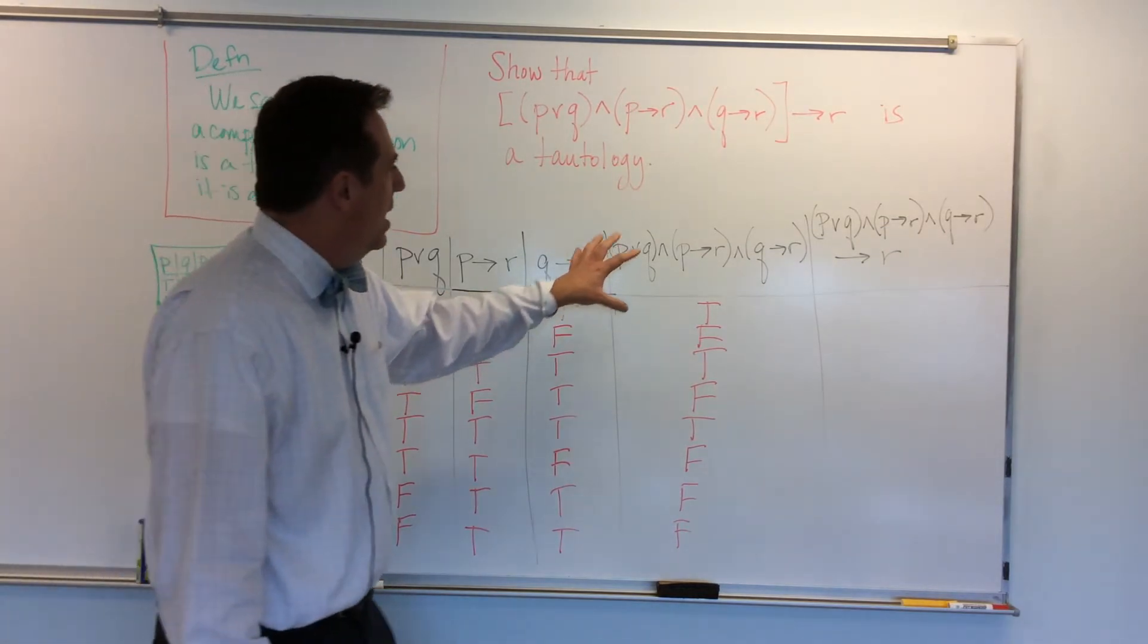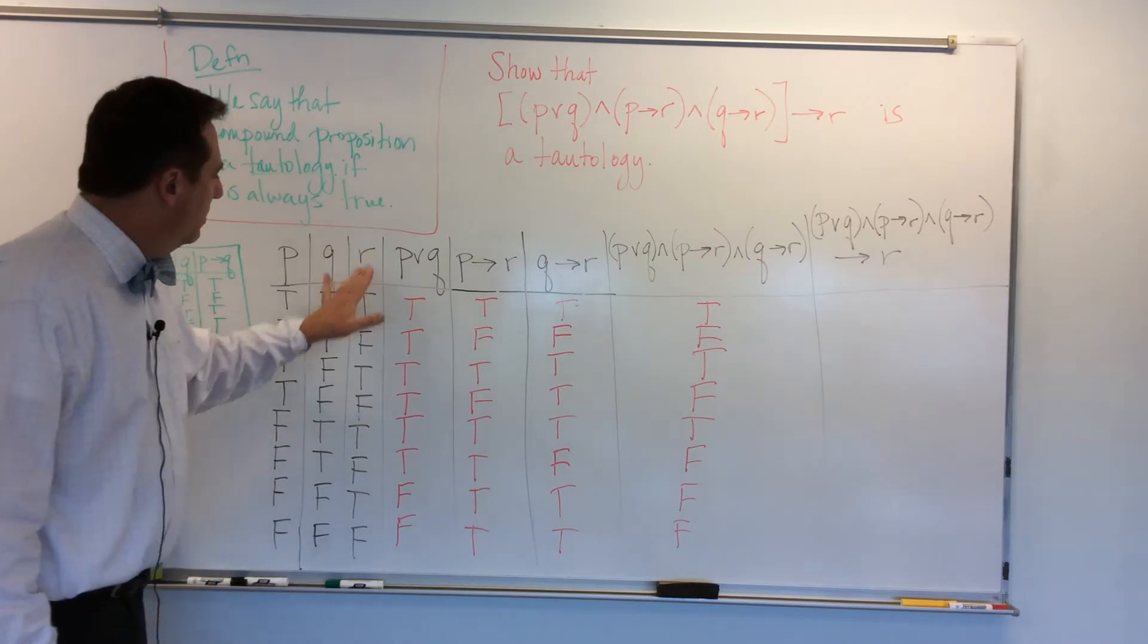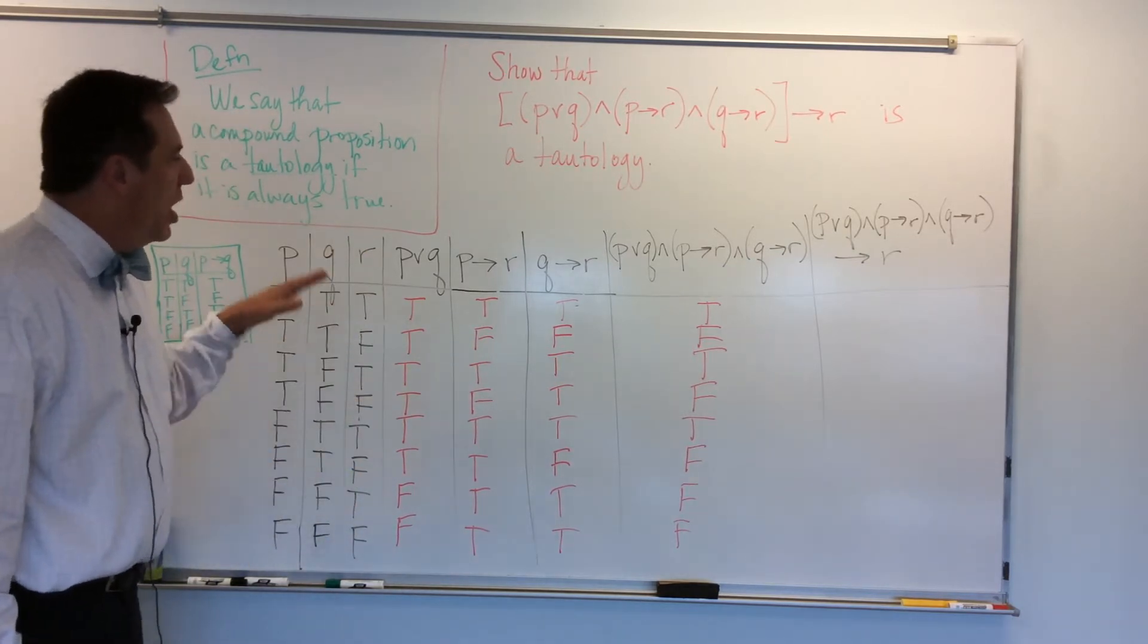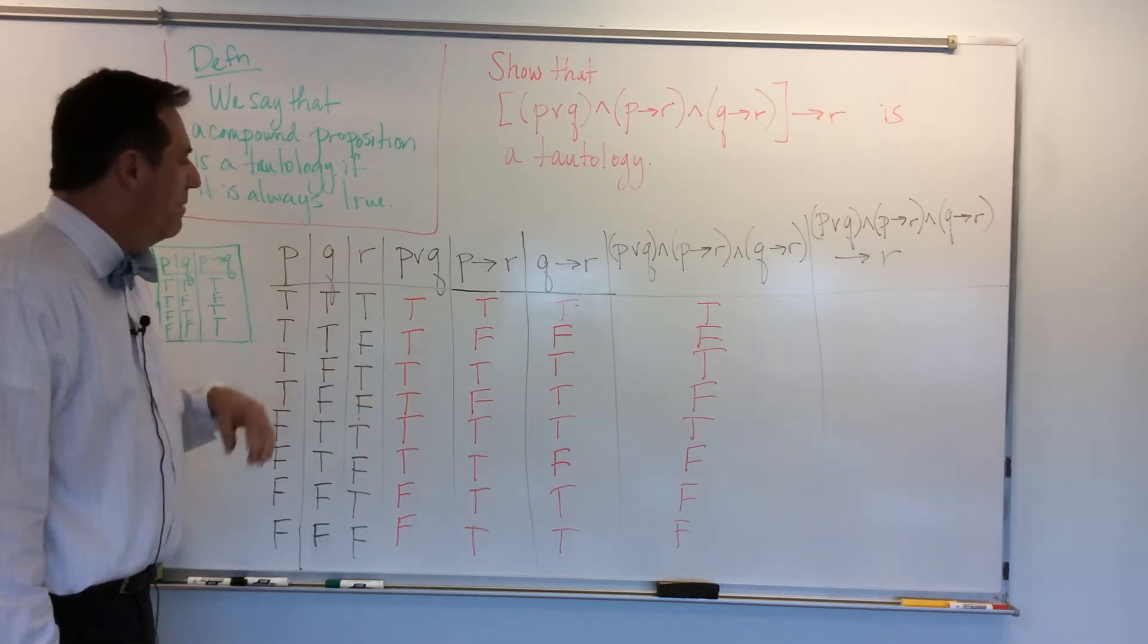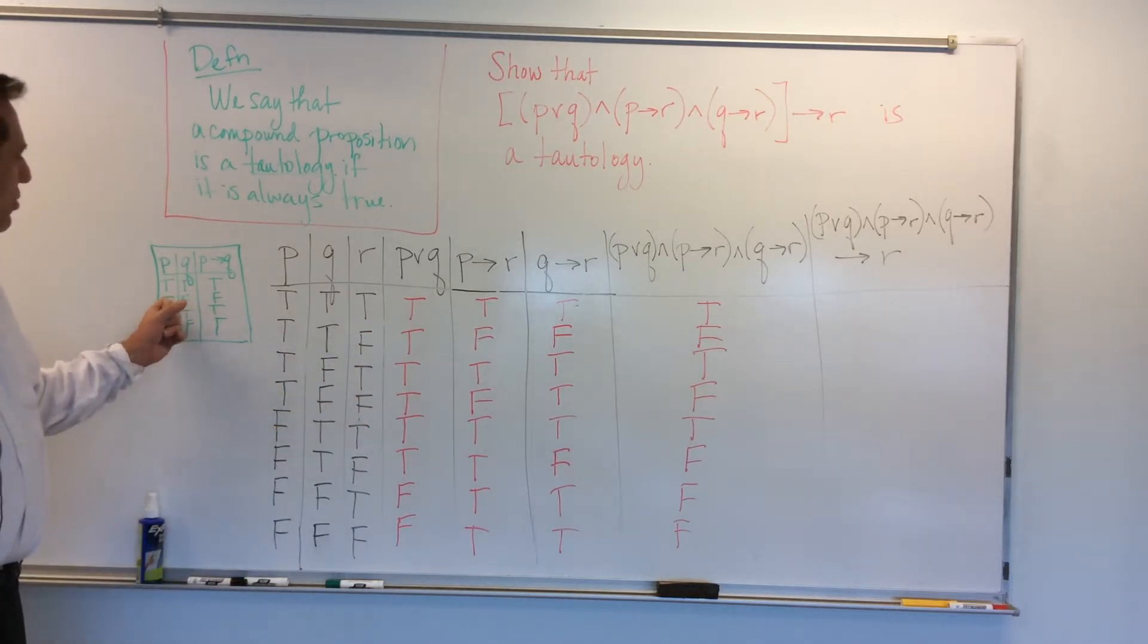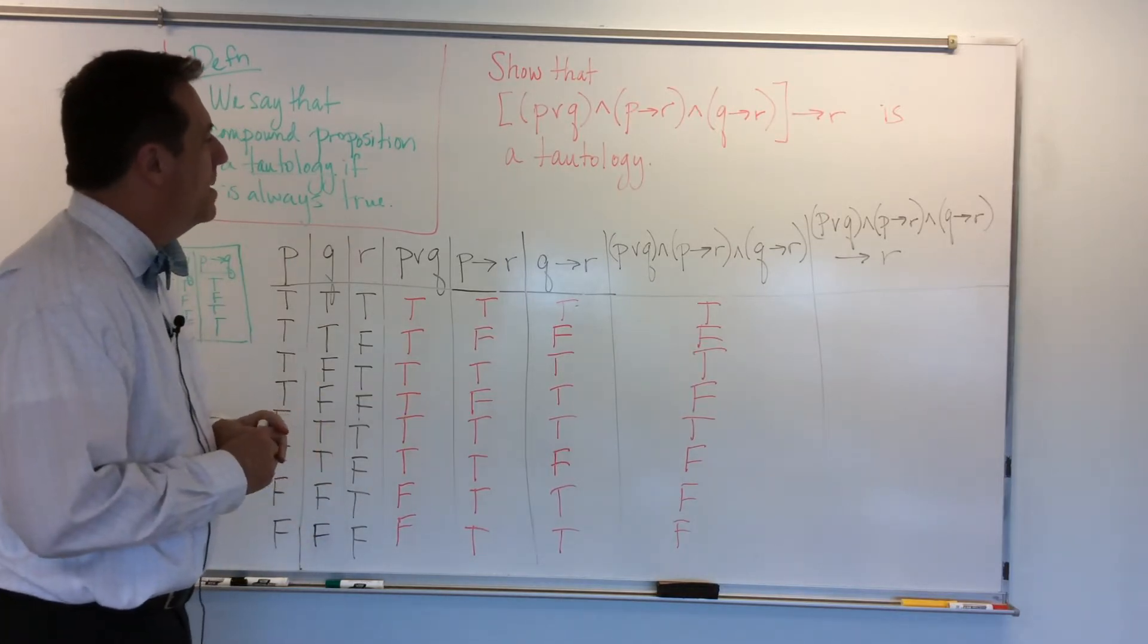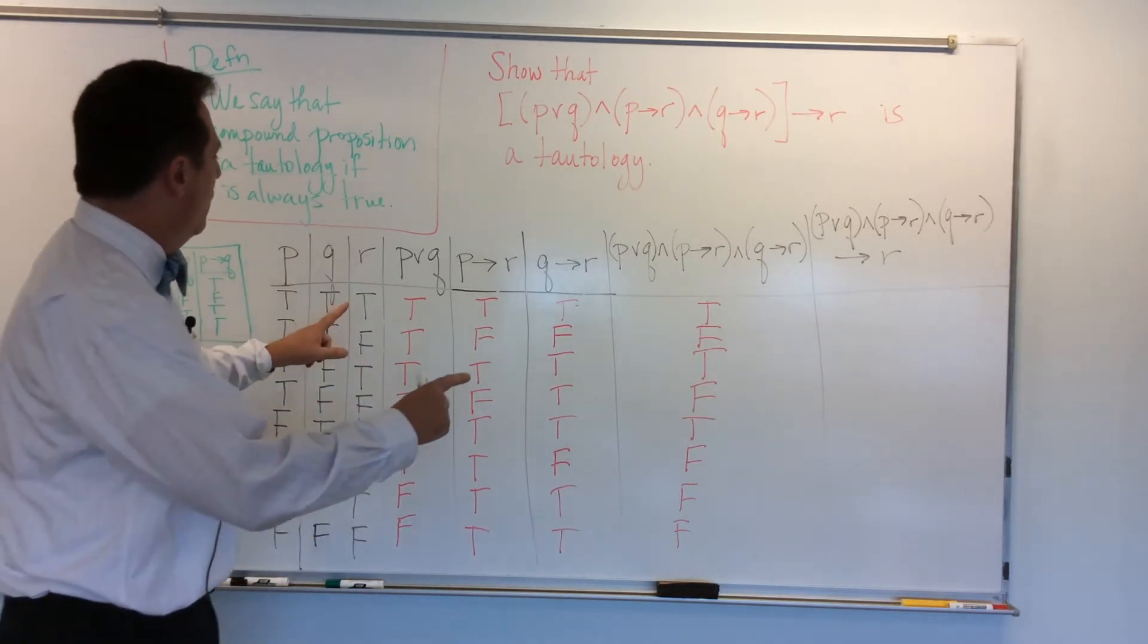We have this over here. So again, based on this cheat sheet here, all I have to do is figure out where this column is true, but this column is false. And those are the only places where I have to worry about a false creeping in. So true and false. True implies false means false. The rest mean true.